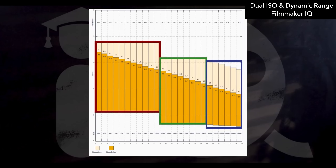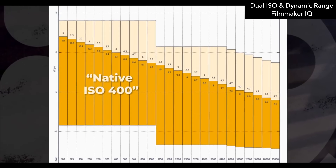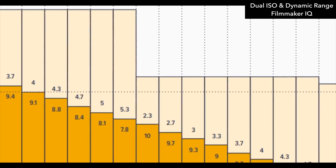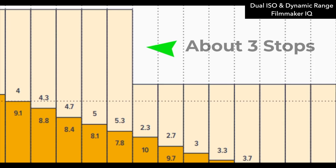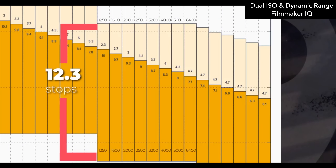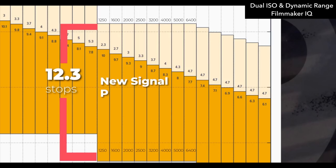If we look at this chart here, it actually explains just that. When we go from ISO 1000 to 1250, we lose three stops of highlight detail. Why is that?